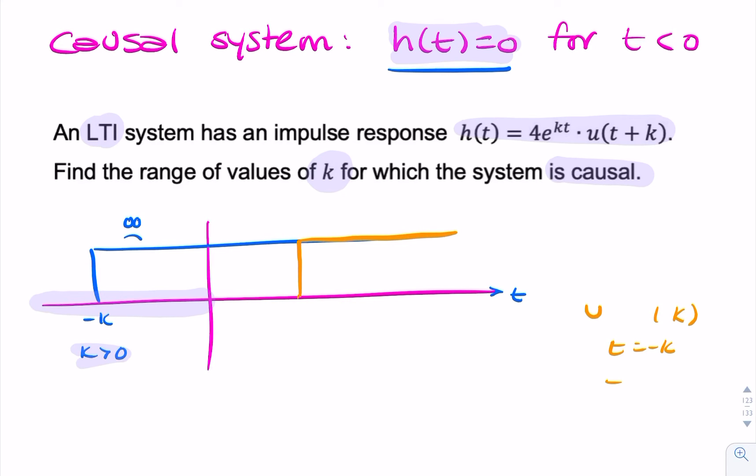And this would be minus k, whereas k is negative. And here, for negative time, up till the value of t equals minus k, h of t is equal to zero. So we're okay.